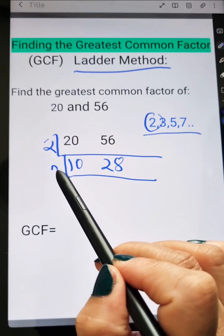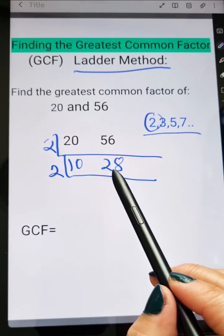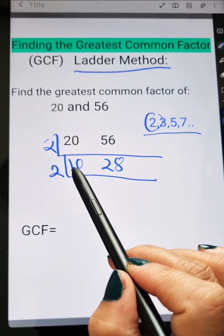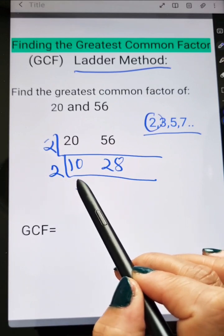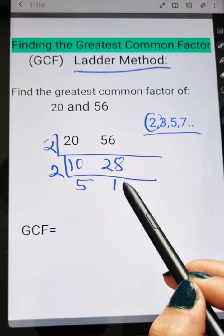Again, I'm going to use 2 because 10 and 28 again are divisible by 2. So 10 divided by 2, that is equal to 5, and 28 divided by 2 is equal to 14.